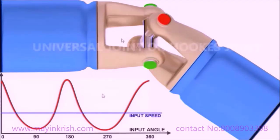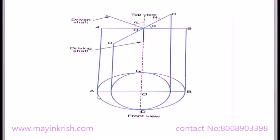Now, with the help of the projections of this universal joint — that is, with the front view and the top view — we are going to determine the true angle to get the output velocity. This is the front view and top view projection of a cross arm link of a universal joint. When viewed along the driving shaft, the cross arm of the driving shaft appears as a circle and the cross arm of the driven shaft appears as an ellipse. That is, cross arm AB, being nearer to the observer, appears as a circle, and CD, being away from the observer, appears as an ellipse.